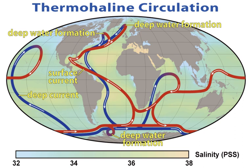Ocean acidification describes the decrease in ocean pH that is caused by anthropogenic carbon dioxide emissions into the atmosphere. Seawater is slightly alkaline and had a pre-industrial pH of about 8.2. More recently, anthropogenic activities have steadily increased the carbon dioxide content of the atmosphere. About 30 to 40 percent of the added CO2 is absorbed by the oceans, forming carbonic acid and lowering the pH through ocean acidification.